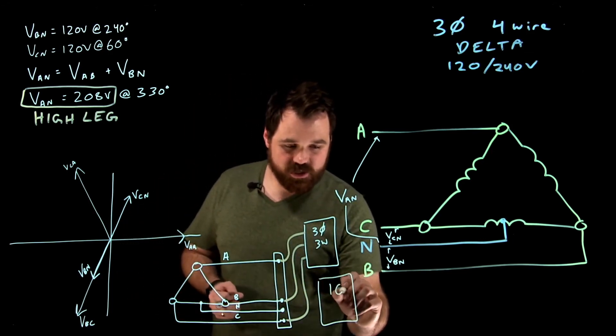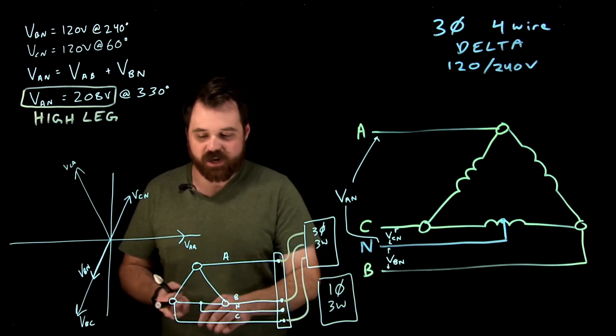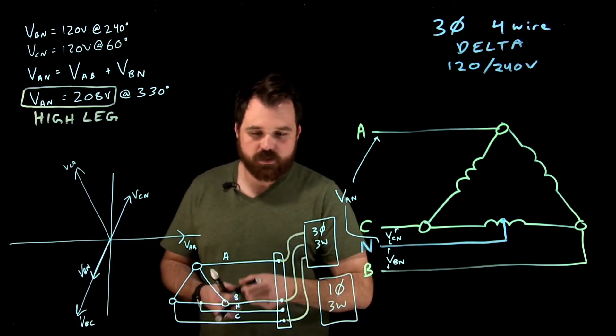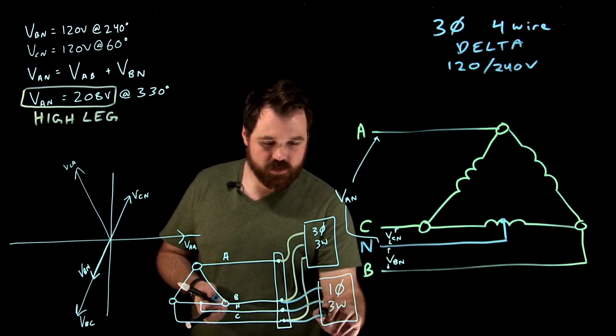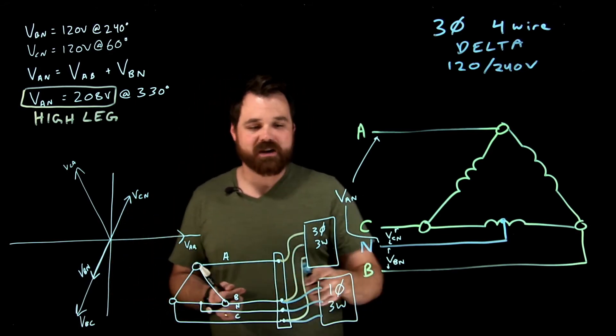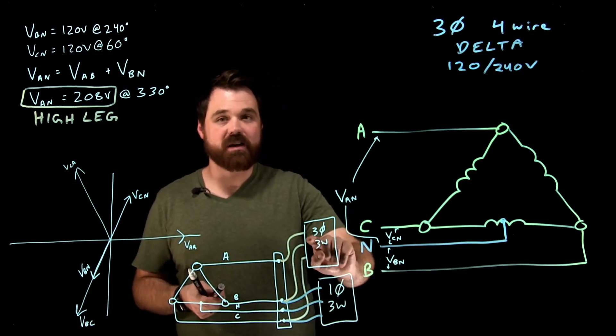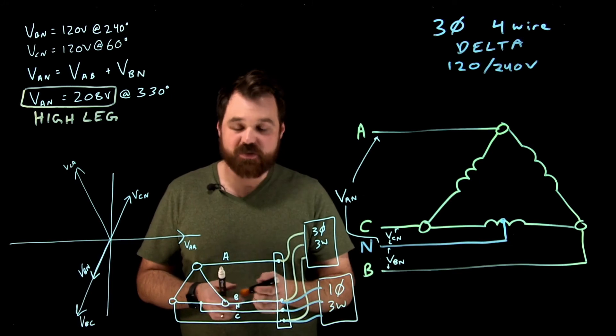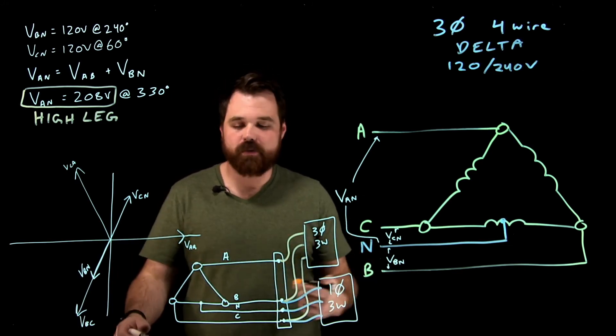It will be a single phase, three wire, 120/240. And it will see B, neutral, and C. It will not have access to A and neutral in the same panel board. So here is A, B, C, and here down here would be B, neutral, and C. So they cannot be in the same equipment.